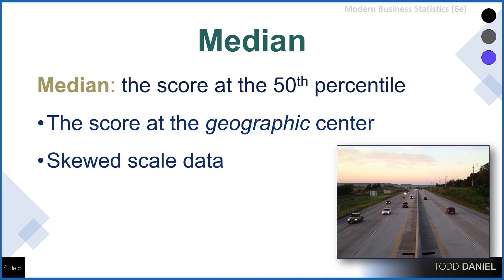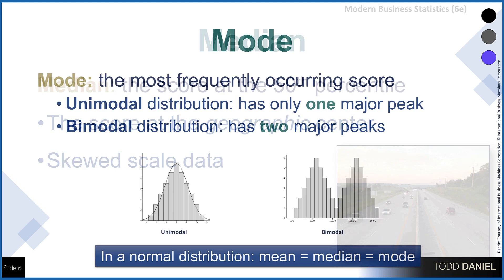The median is the score at the geographic center of the distribution, in the same way that a median of a road is right in the middle of the road. Mathematically, it's the score at the 50th percentile. We'll use a median if we have ordinal data sometimes, but we will also use the median when we have skewed scale data, such as housing prices, where a few very highly priced houses would skew the mean and give us an inaccurate measure. In that case, we would use the median.